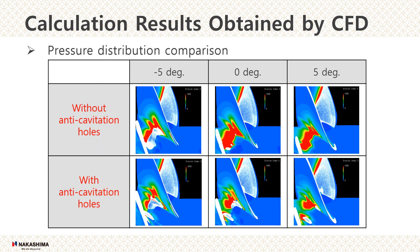We then compare the risk of erosion. This slide shows a pressure distribution comparison, showing the view of propeller blade roots from above. In this figure, the high erosion risk area is shown in red, indicating rapid pressure recovery. For the propeller without anti-cavitation holes, the high erosion risk area around root cavitation is larger, while the area is smaller for the propeller with anti-cavitation holes. This evaluation indicates that anti-cavitation holes can be effective in reducing the area of rapid pressure fluctuation and suppressing the erosion range.